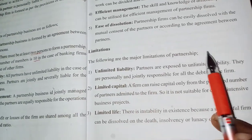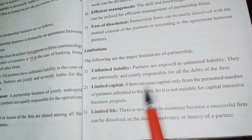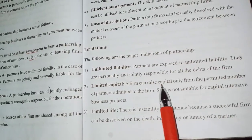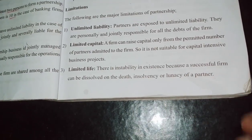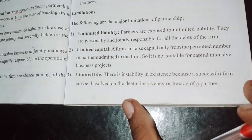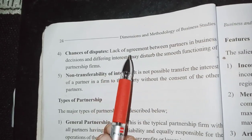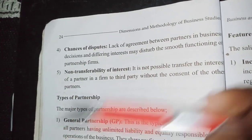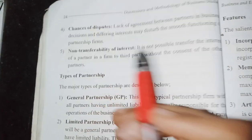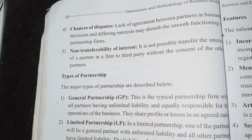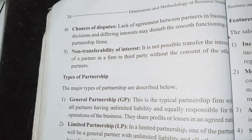Limitations of partnership: Unlimited liability — all partners have unlimited liability. Limited capital compared to sole capital. Limited life: a partner's death, insolvency, or lunacy will affect the business and may be a reason to wind up the firm. Chances of disputes: there are many chances of disputes in a partner relationship. Non-transferability of interest: it is not easy to transfer your interest in a partnership firm.